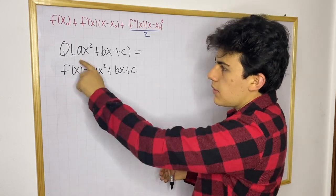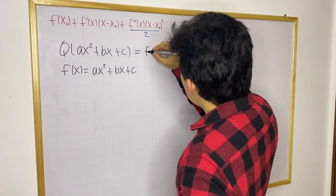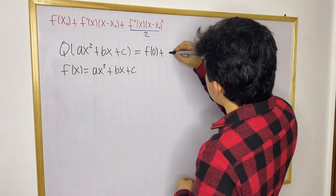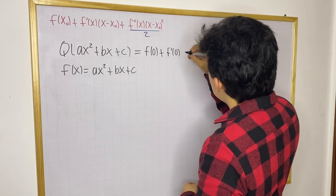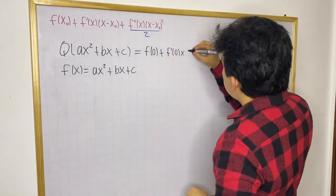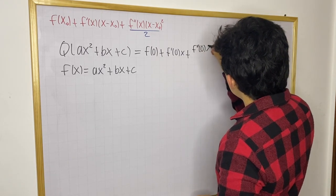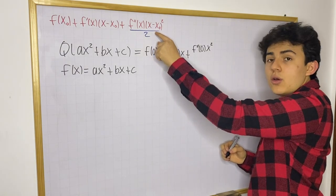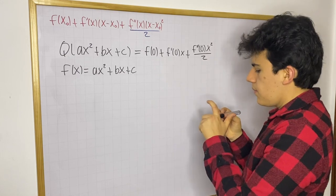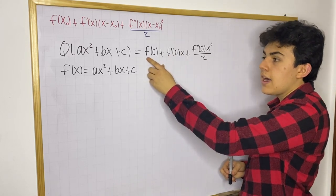So for approximations near x equals 0, we know the first term is going to be f of 0. Then we have the derivative of the function evaluated at 0, so f prime evaluated at 0 times x — since x-naught equals 0, you just get x. Plus our quadratic term, which is going to be f double prime of 0 times x squared over 2 — since x-naught equals 0, you just get x squared over 2. This is the quadratic approximation formula near x equals 0 for any function, and here f is defined to be our polynomial.